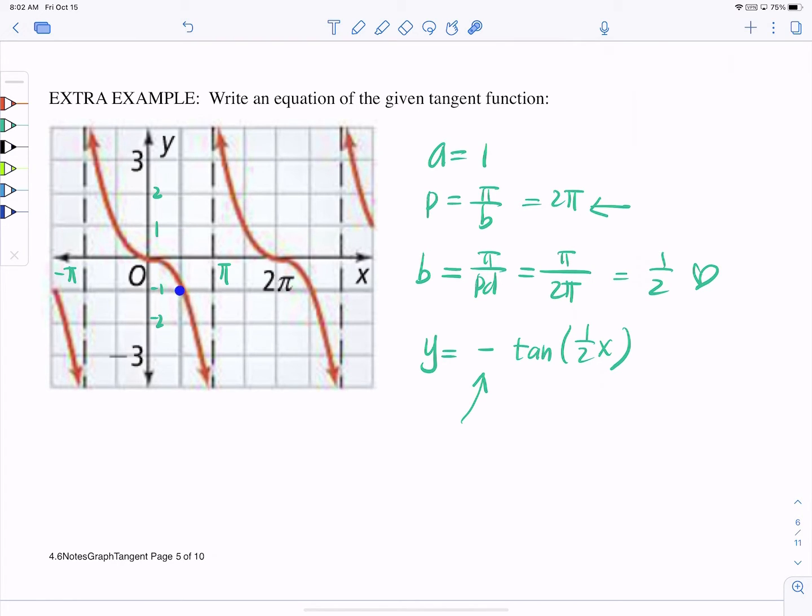Everything that used to be here became here. Everything that used to be here came up here, because our normal tangent graph goes like that. Remember that. Take a look at your notes from the previous lesson.